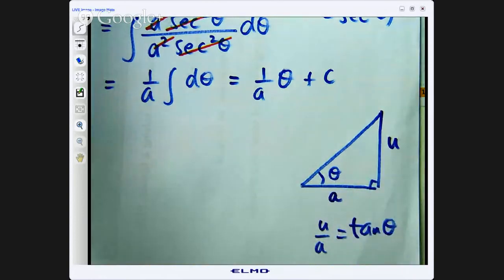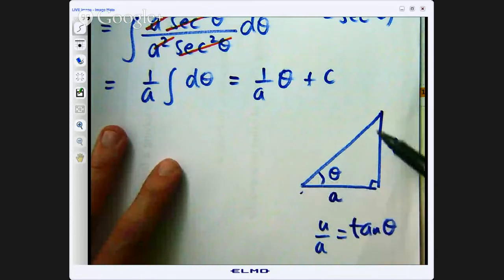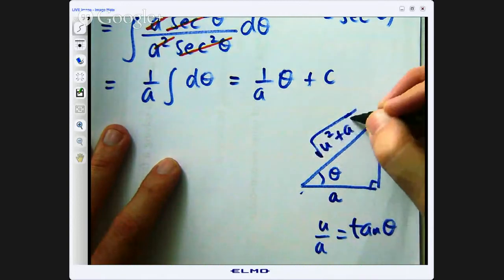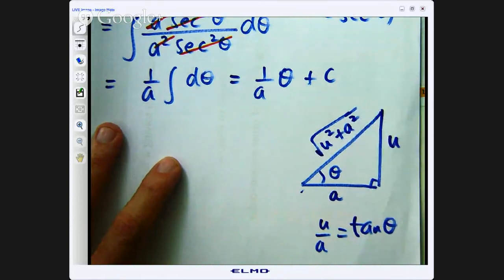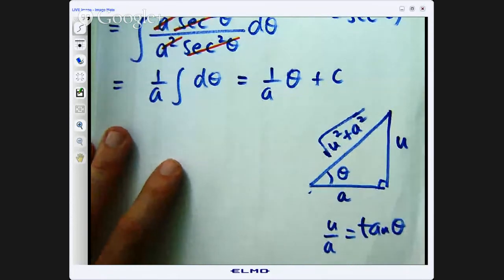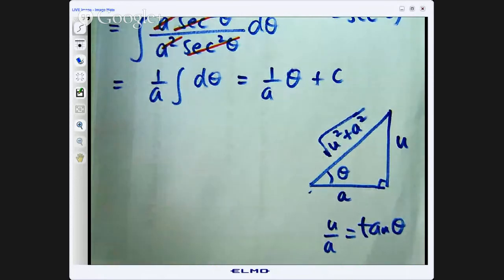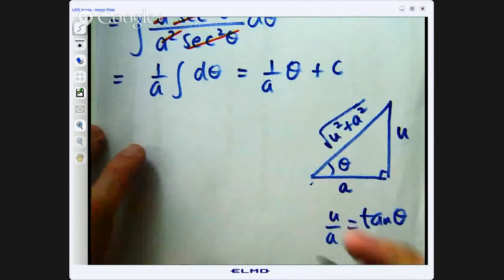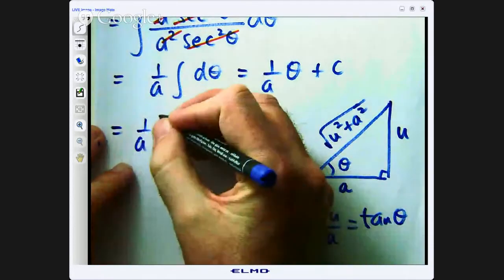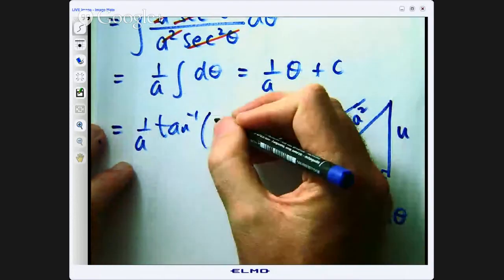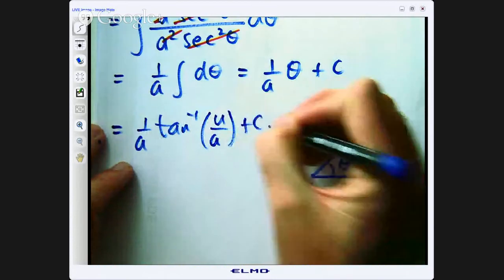And this length, the hypotenuse squared equals a squared plus u squared. So this will be u squared plus a squared square root by Pythagoras. The θ is just the tan inverse of this. u on a plus a constant.